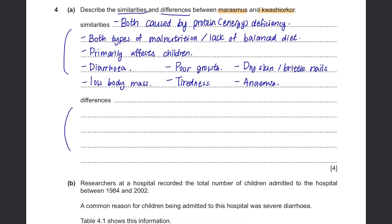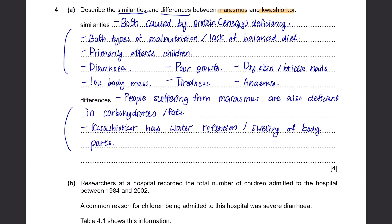There are differences as well. One difference is that people suffering from marasmus are also deficient in other nutrients such as carbohydrates and fats. But for kwashiorkor, it's because they're deficient in protein only. Due to that, the symptoms of kwashiorkor include swelling of body parts such as the belly area. That gives us two marks from differences.